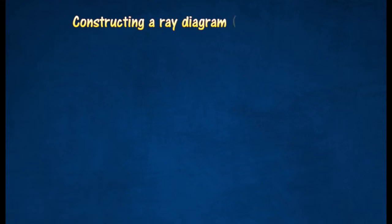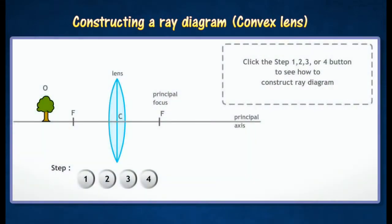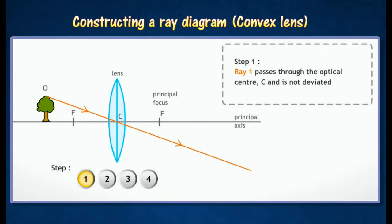Constructing a ray diagram in convex lens. A ray of light passes through the optical center of the lens is undeviated.